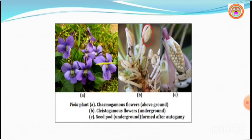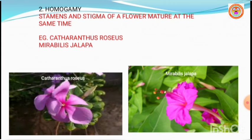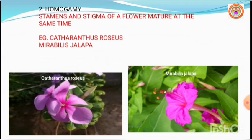The second adaptation is homogamy, where the stamens and stigma of a flower mature at the same time. 'Homo' means similar — both sex organs of the flower mature simultaneously. Catharanthus roseus, belonging to the family Apocynaceae, and Mirabilis jalapa are examples where stamens and stigma mature at the same time, which favors self-pollination in these plants.